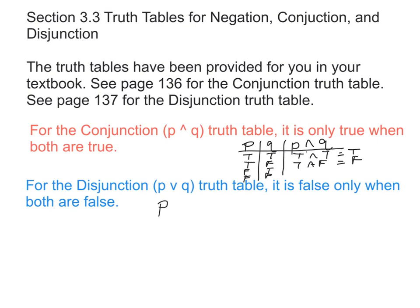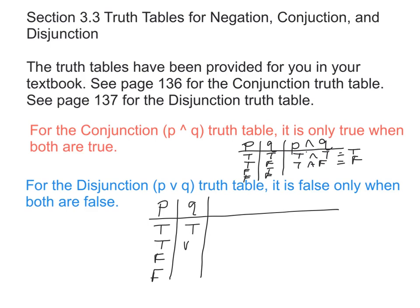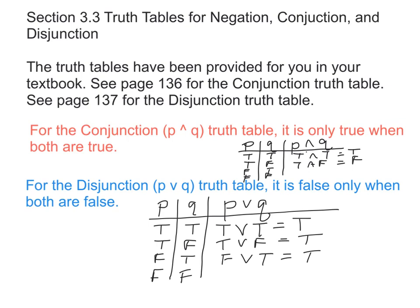Whereas for the OR, you have P and you have Q — True, True, False, False for P, and True, False, True, False for Q. For P or Q, as given in your textbook: True or True is True, True or False is True, False or True is True, but False or False is False. Remember, the only time this is the case is when both components are false.